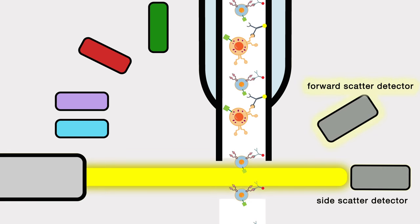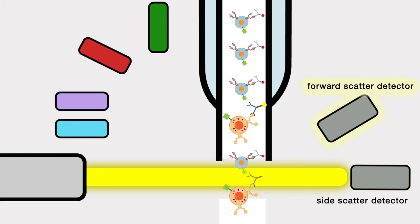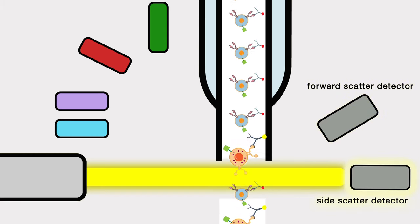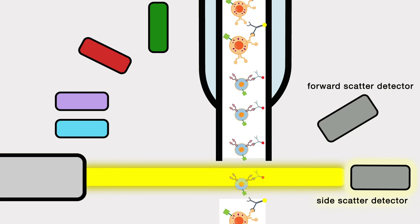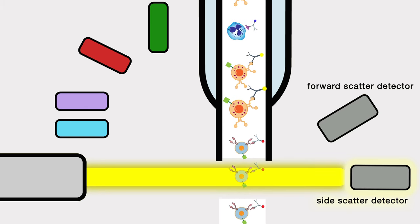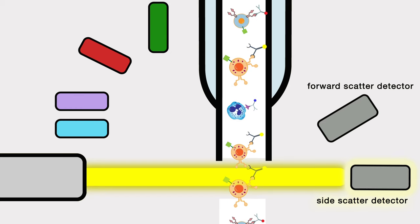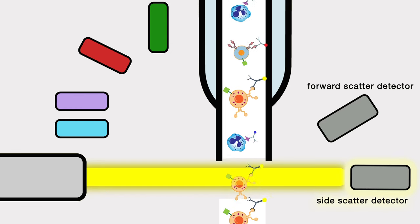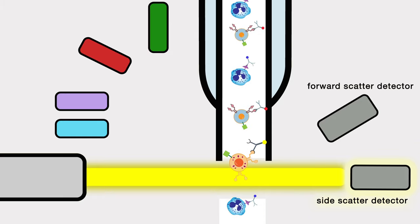The laser first gives us a measure of the forward and side scatter of the cell. Forward scatter tells us about the size of the cell. Larger cells have a larger forward scatter. Side scatter measures something called granularity. This sounds confusing, but basically some cells are packed full of more proteins or organelles than others are, and cells with more stuff inside their cytoplasm are considered more granular, so they will have a larger side scatter measurement.